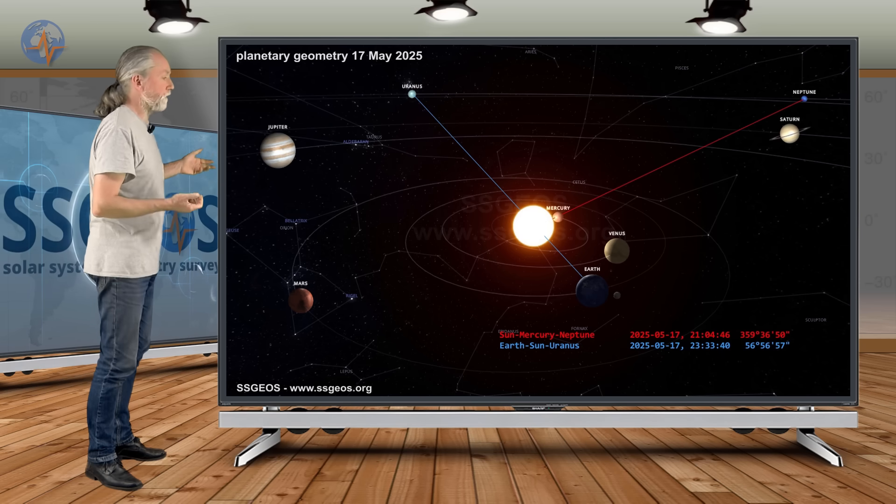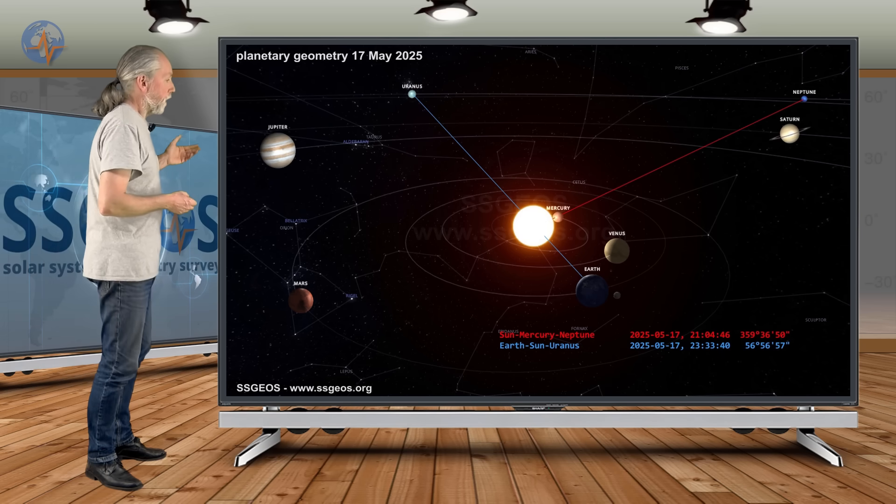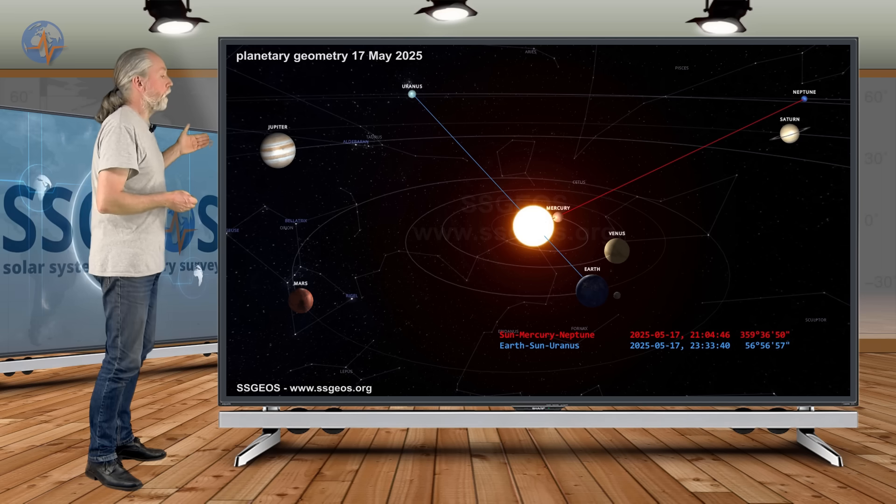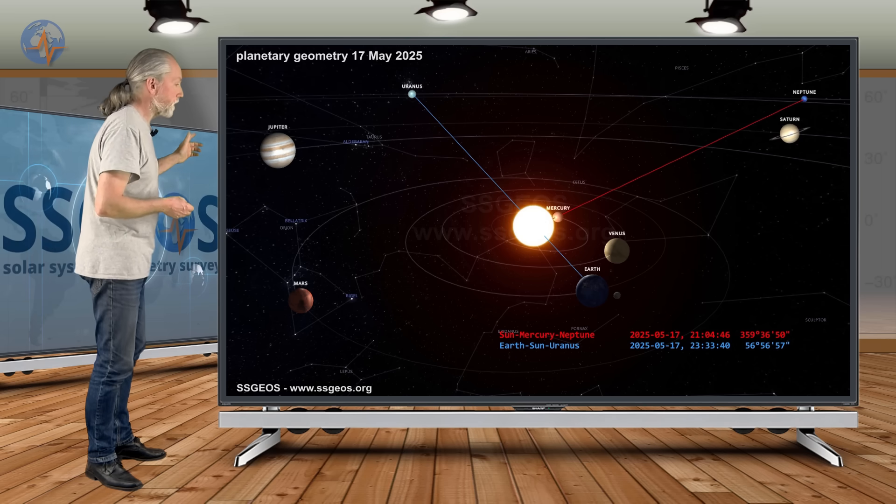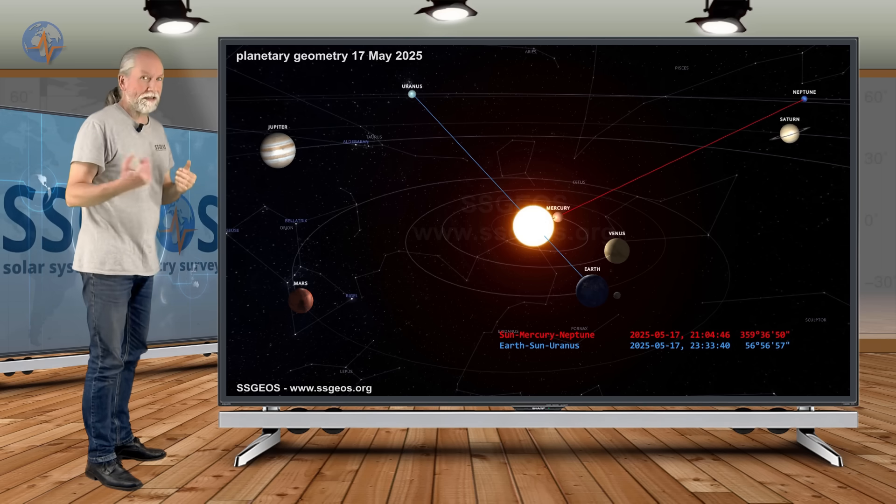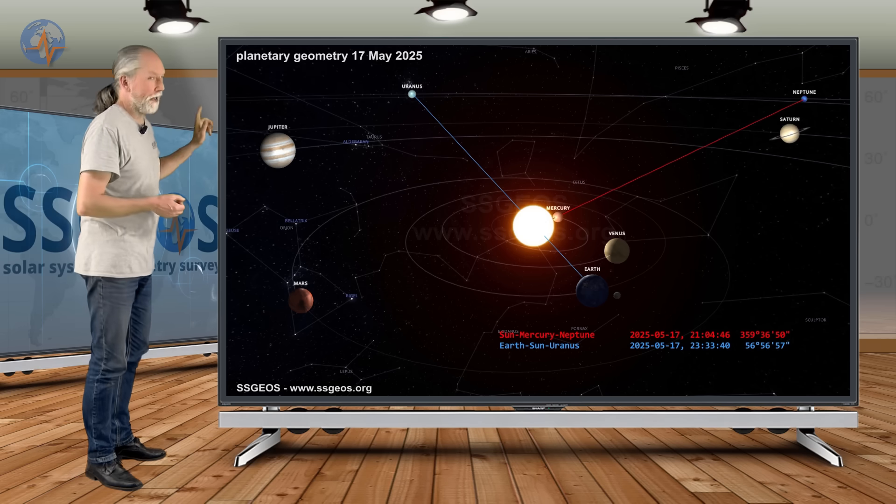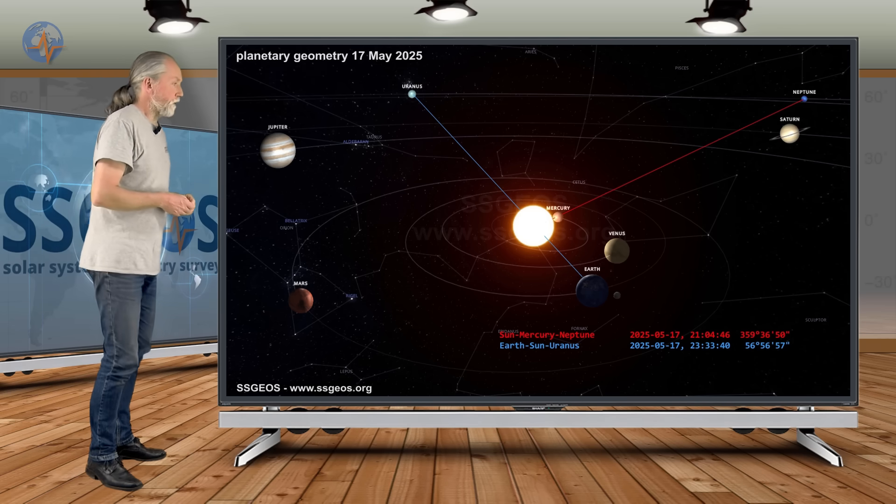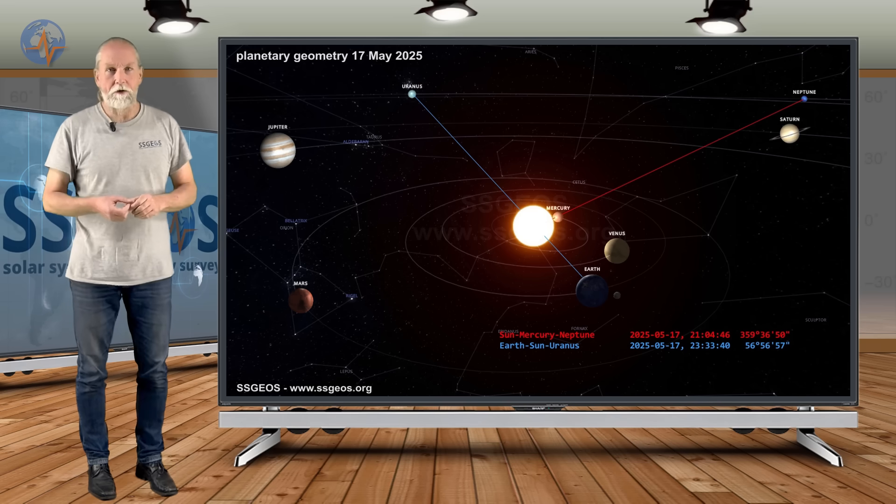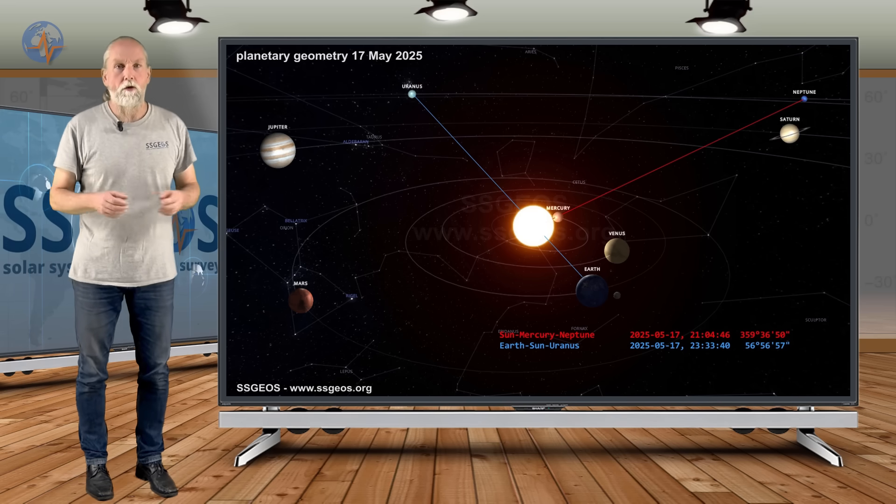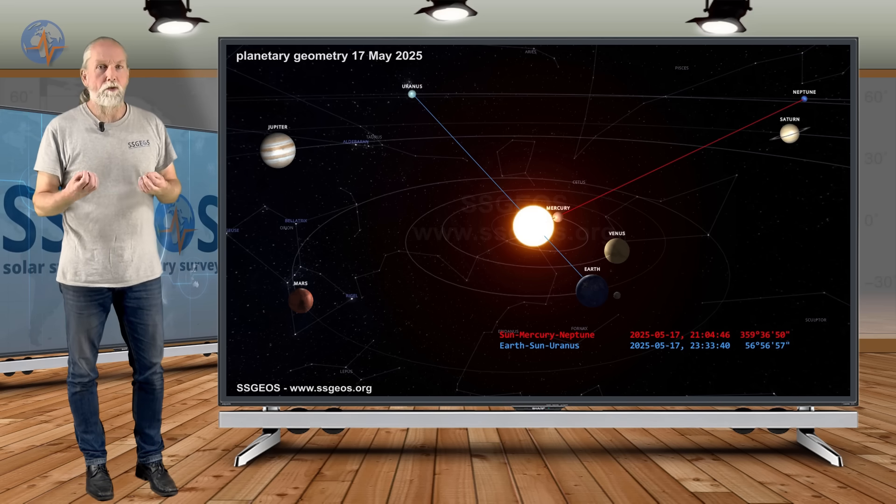And then on the 17th, later on the 17th and 18th, we have the Earth in a conjunction with the Sun and Uranus. At the same time, almost the same time, we have Sun, Mercury and Neptune in a conjunction. So this is exceptional. You don't see this very often. A sequence of critical planetary geometry, these clusters of conjunctions.